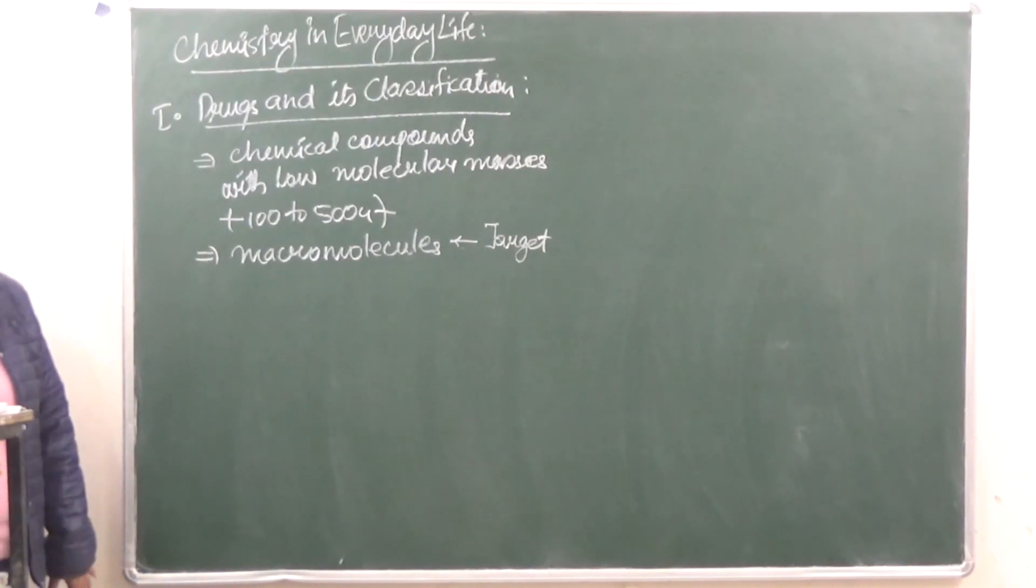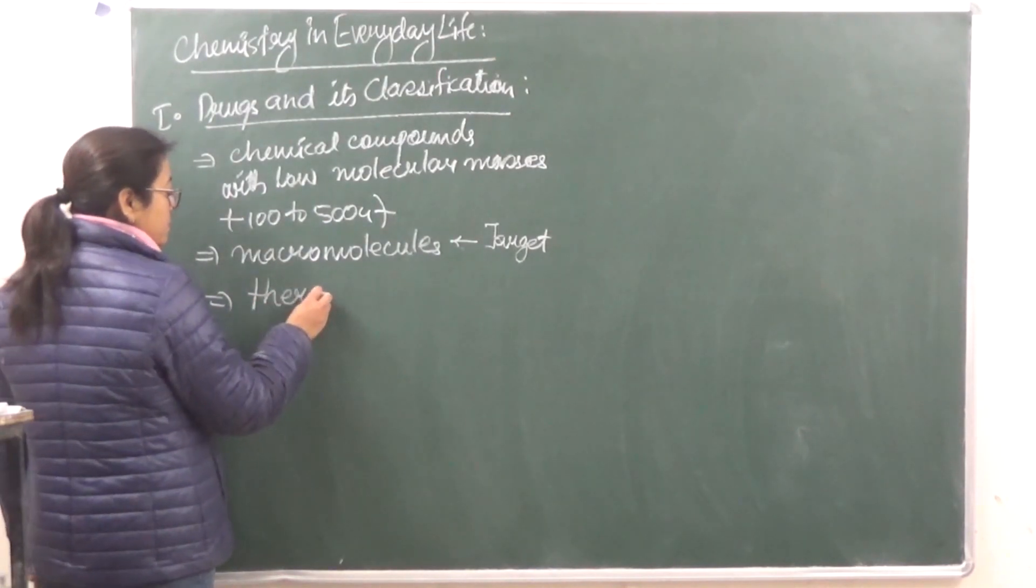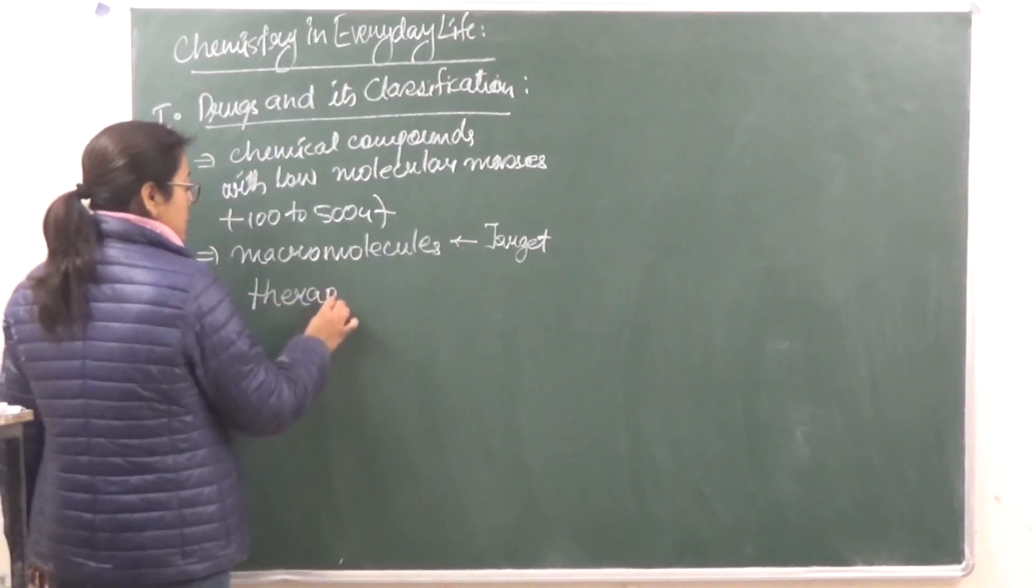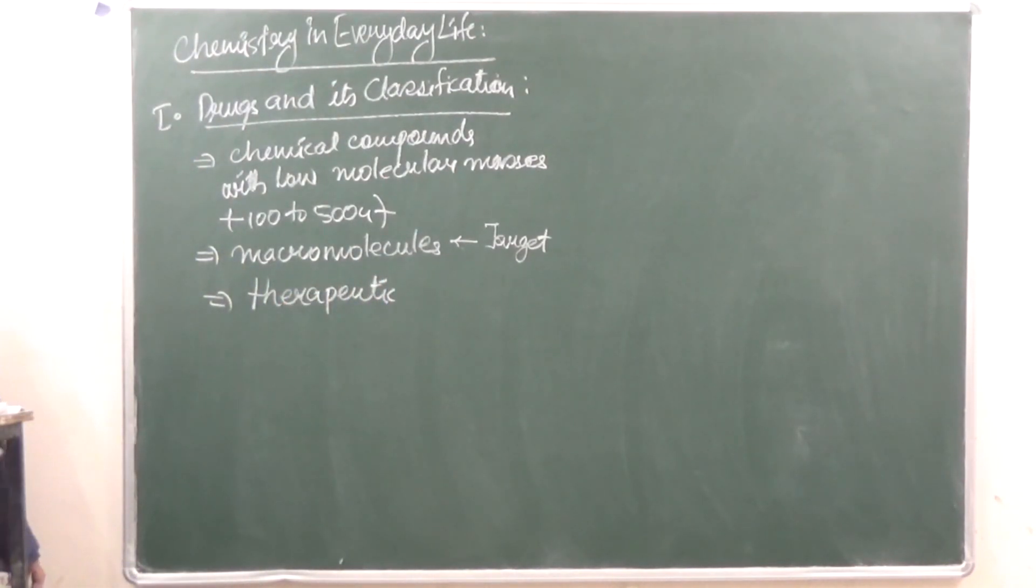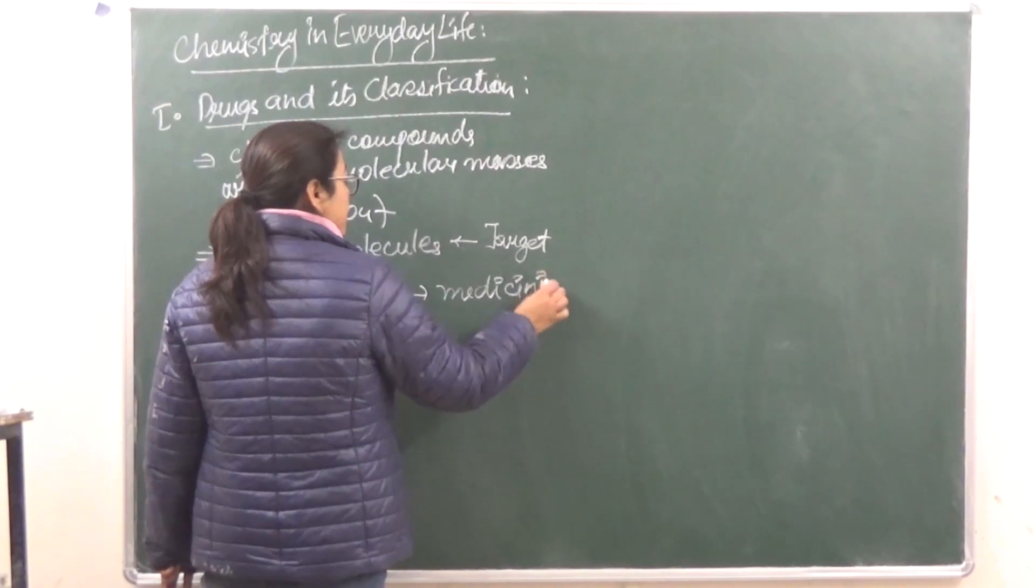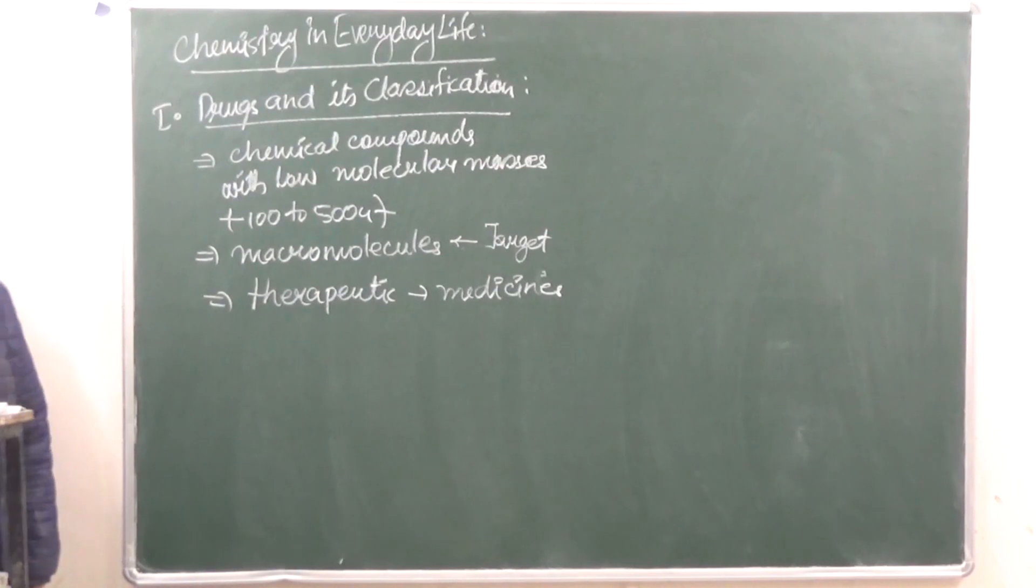Now if we have these drugs, their response is therapeutic. If their effect or response is therapeutic, then these are known as medicines. So drugs whose response is therapeutic, they are useful for the body, and therefore they are known as medicines.